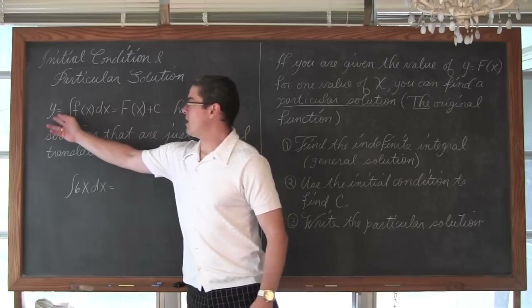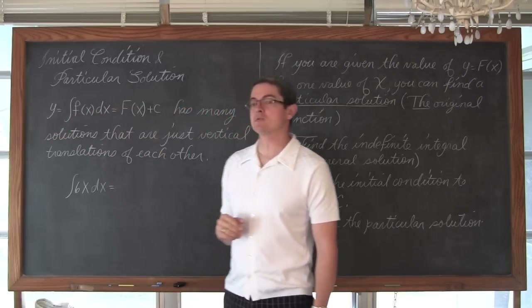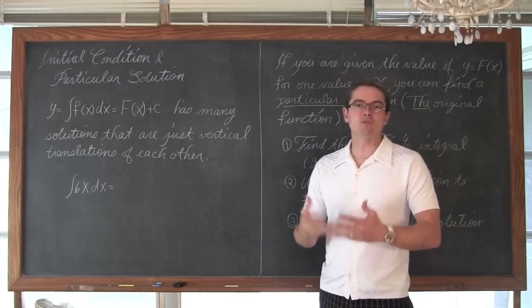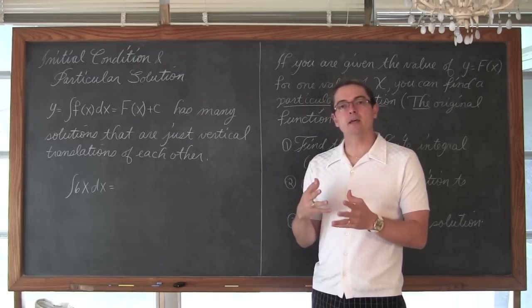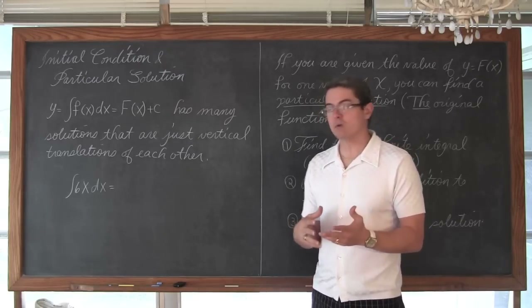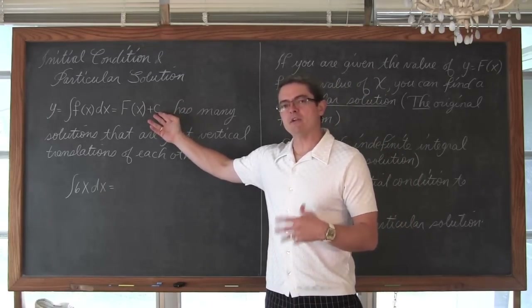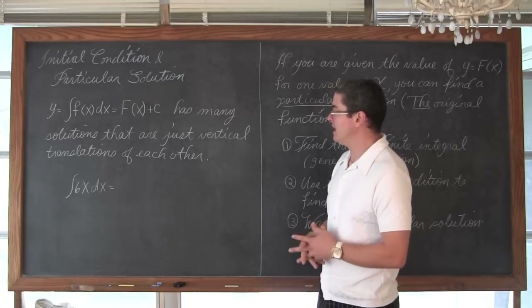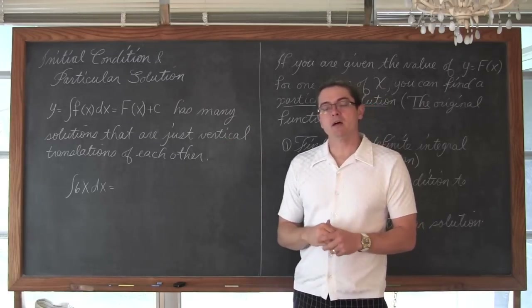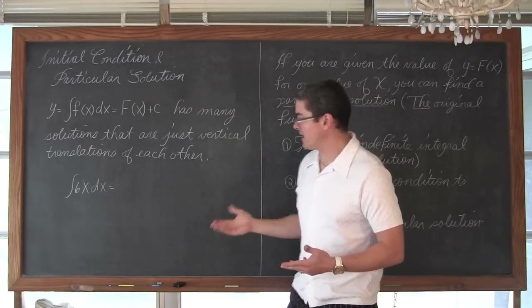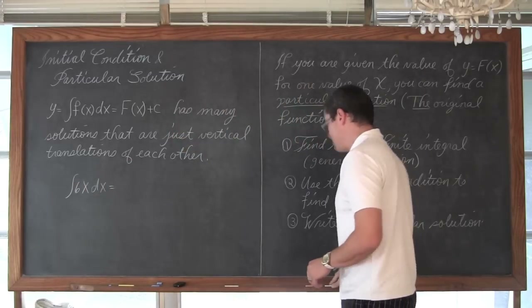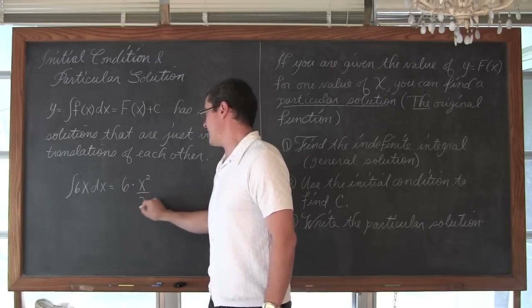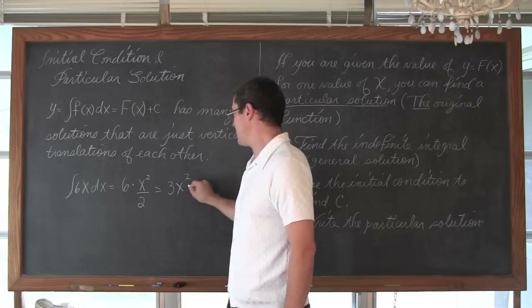Now what I mean by that is: y is equal to the antiderivative of f with respect to x, and that is equal to F plus C. We talked about how when we find an antiderivative from a derivative, if that is all we are given is that derivative, then remembering that the derivative of a constant is zero, when we find that antiderivative we don't have enough information to find out what C is. So the antiderivative of 6x with respect to x is going to be equal to 6 times x squared divided by 2.